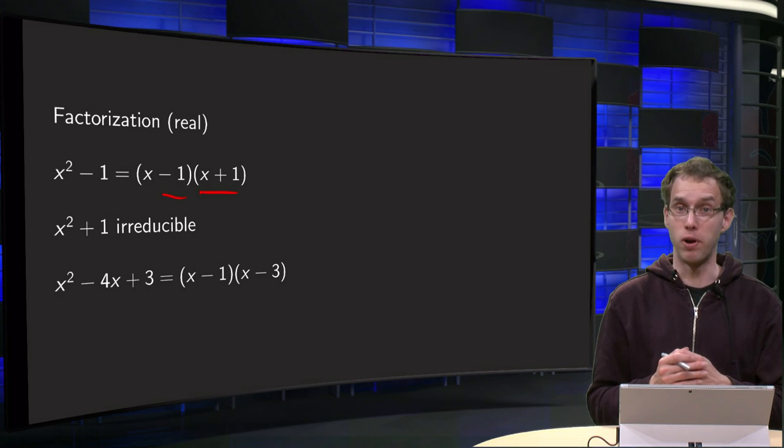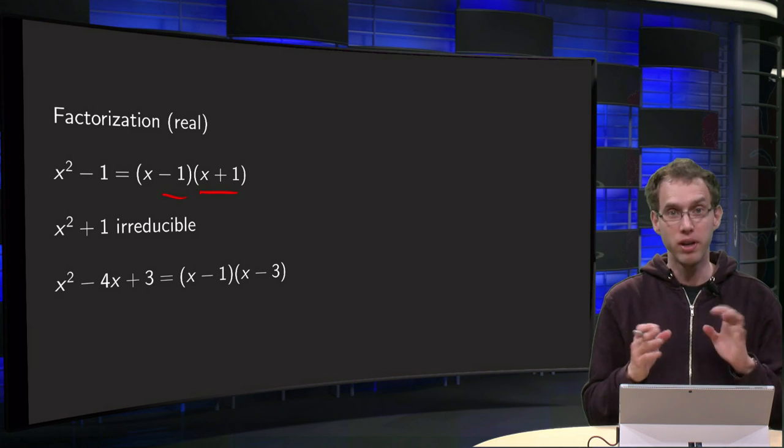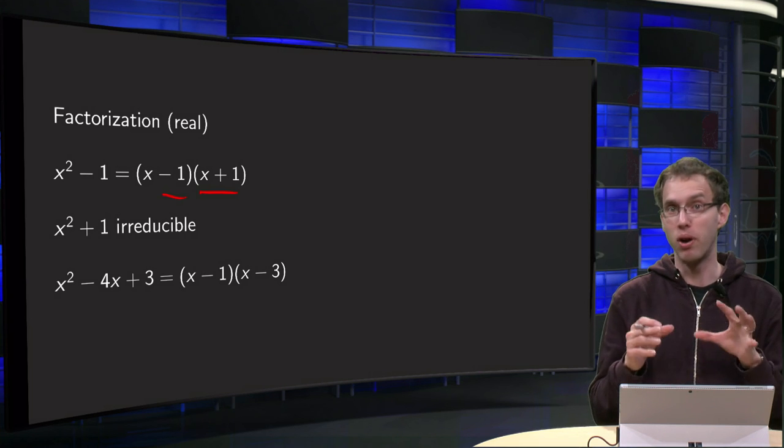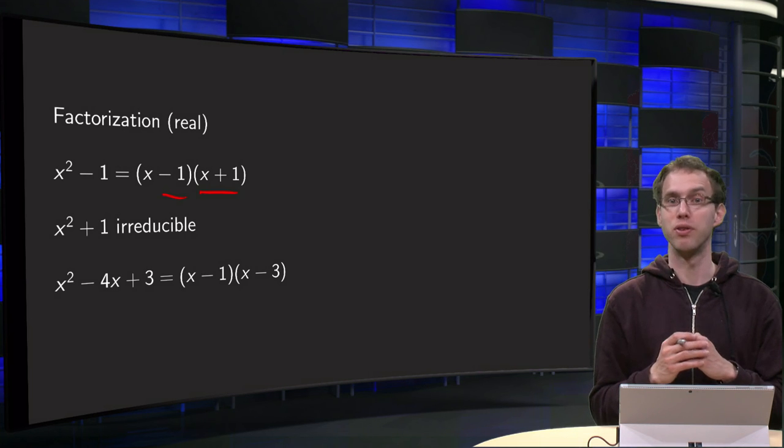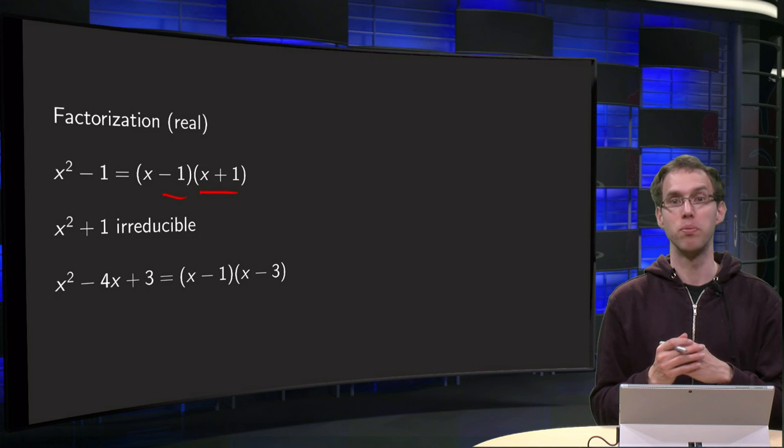Then continue with x² + 1. Also no linear term present, but now if you look only at real numbers, you cannot factorize this one further. That's called an irreducible polynomial.